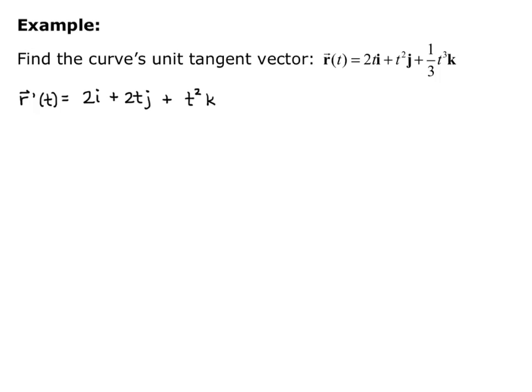And now I need to find the magnitude of r prime of t. So the magnitude of r prime of t is equal to the square root of 2 squared plus quantity 2t quantity squared plus t squared squared. So I want to simplify this as much as possible to make my calculation easy. So I square each term, and I have the square root of 4 plus 4t squared plus t to the fourth.